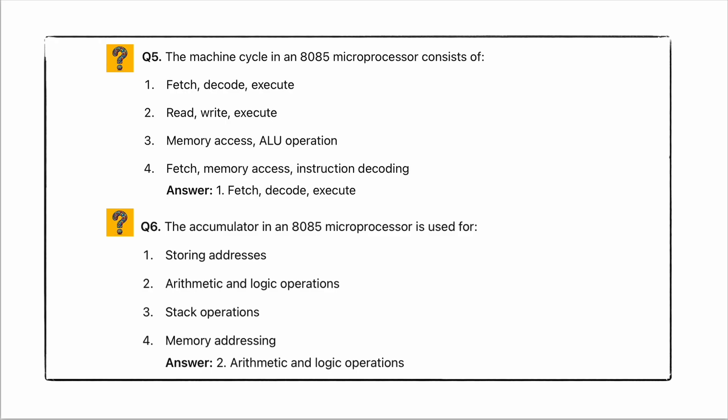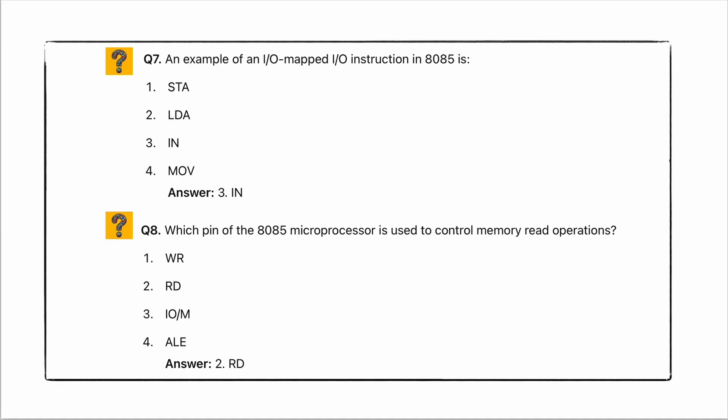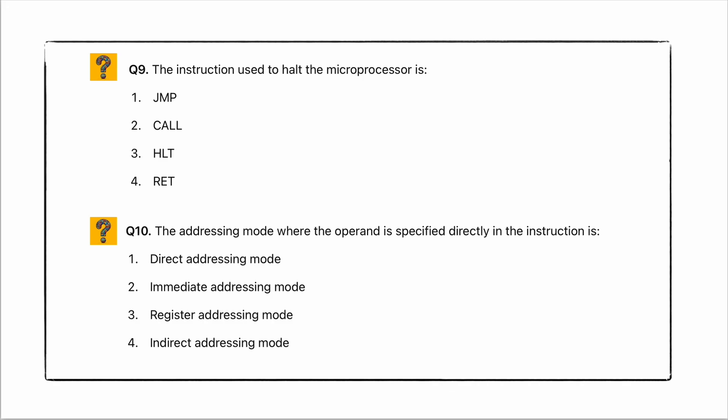Coming to the next question: an example of input/output mapped instruction in 8085. Which pin of the 8085 microprocessor is used to control the memory read operation? Coming to the answer: the example input/output mapped instruction in 8085 is the IN/OUT instruction. The pin used to control the read operation is RD bar, option 2.